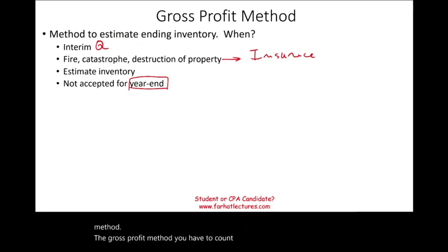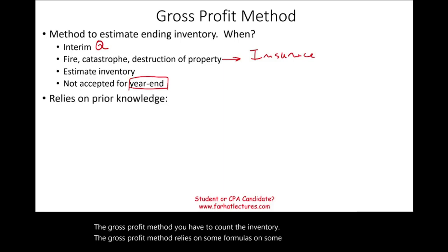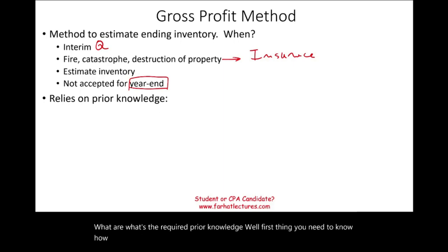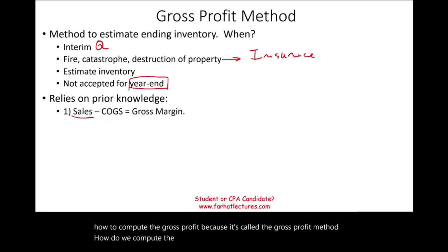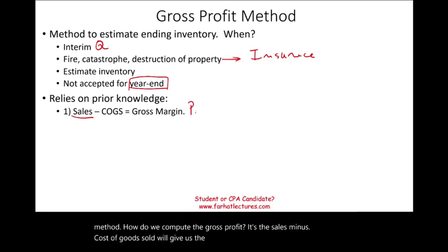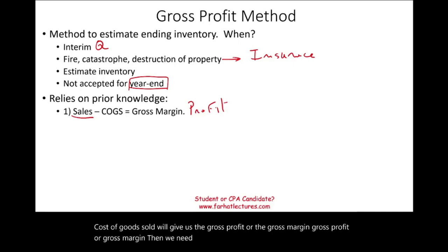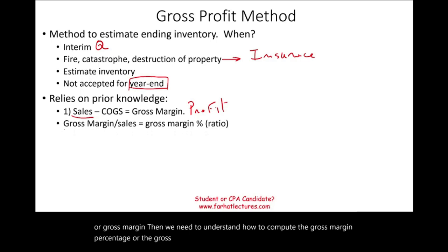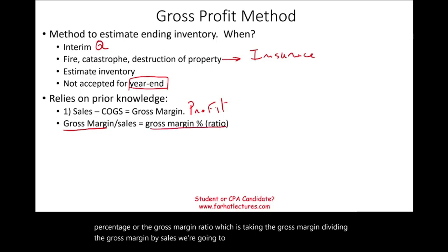The gross profit method relies on some formulas and some prior knowledge. What's the required prior knowledge? First, you need to know how to compute the gross profit, because it's called the gross profit method. We compute it as sales minus cost of goods sold, which gives us the gross profit or gross margin. Then we need to understand how to compute the gross margin percentage or gross margin ratio, which is taking the gross margin and dividing it by sales.